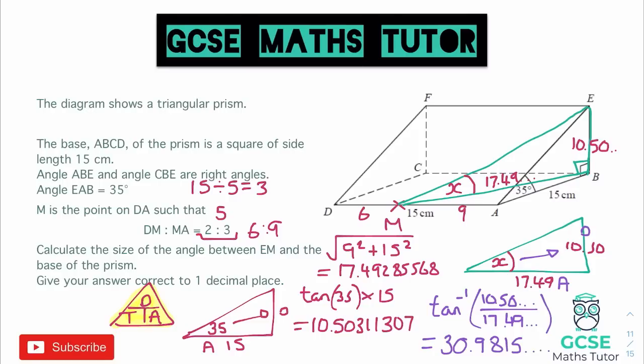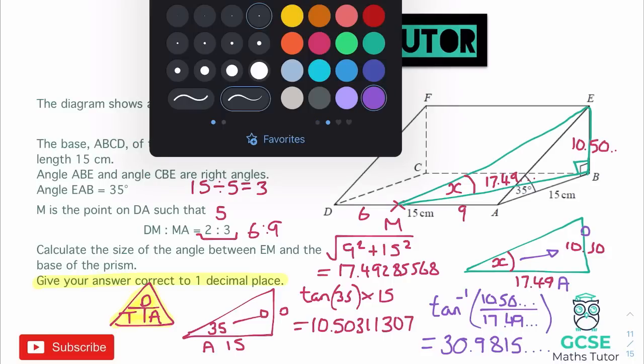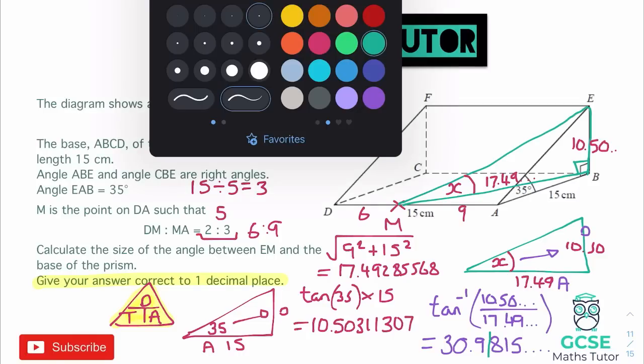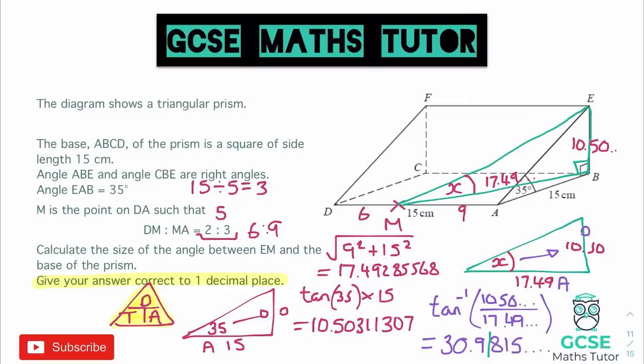Now, I'm not going to write down the full one for that part because it does just say give your answer correct to one decimal place. So I'm definitely going to be able to give my answer and round it correctly now. So looking at what we've got there, we can currently have 30.98. Now, if we chop it after the first decimal, that 9 is actually going to round up because we've got an 8 after it. Now, if it is going to round up, then that's going to make the 30 become 31.